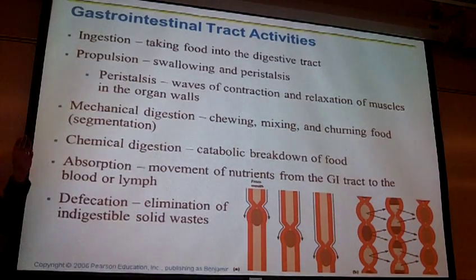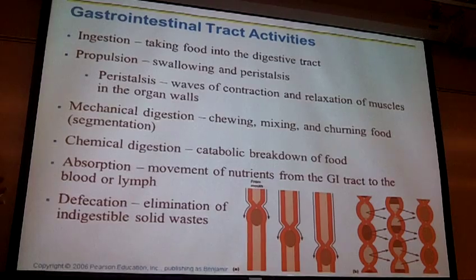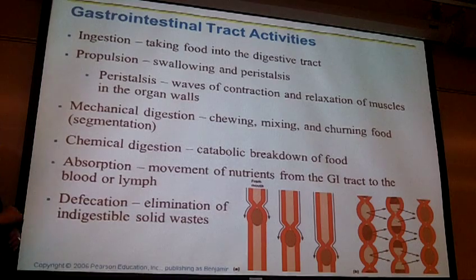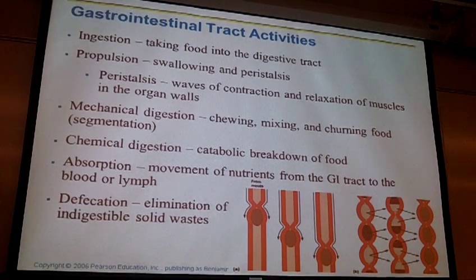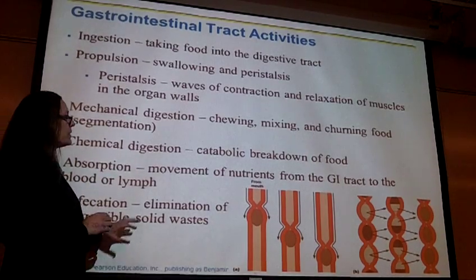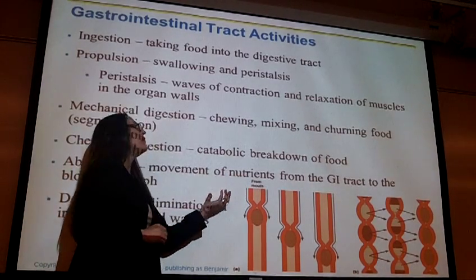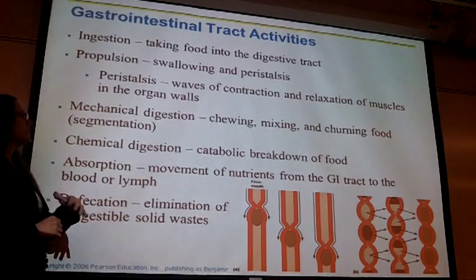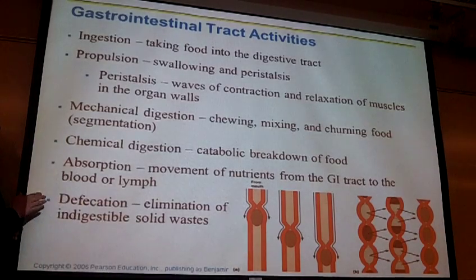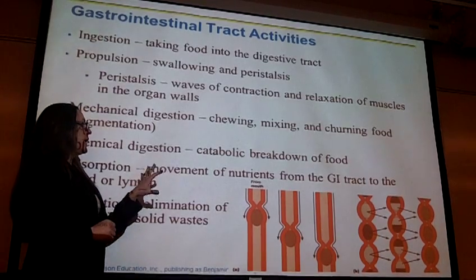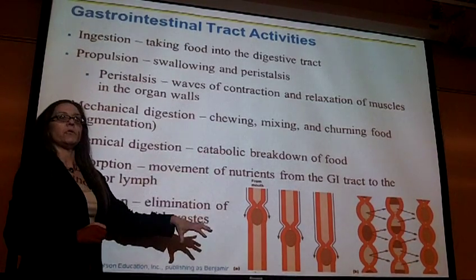Once particles are small enough, we can do chemical digestion, where enzymes come in and cleave the bonds holding these building blocks together. Then absorption: we take these nutrients that are now small enough and move them across the wall of the GI tract. They enter the bloodstream directly, or they enter the lymph, and the lymph drains into the blood.